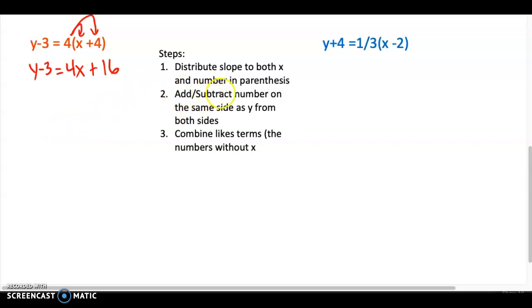Now my step 2 is that I'm going to either add or subtract the number on the same side as y from both sides. So it's a minus 3, so I'm going to add 3 because I want to make that 0. So I'm going to put it right here under the 16 because that's the like term that I already have. So this becomes 0, which is what I want. I got y is equal to 4x. 16 plus 3 is 19. And I'm already done. That one was easy.